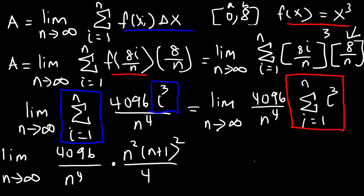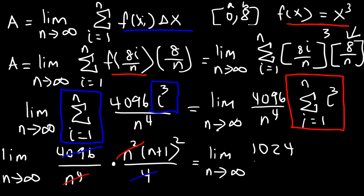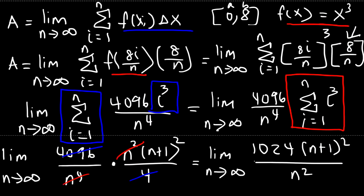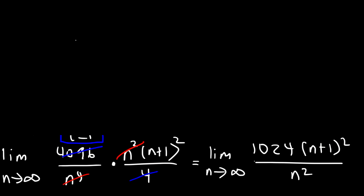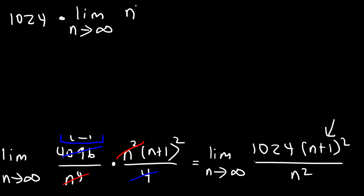Let's simplify. First we divide 4096 by 4: 4000 divided by 4 is 1000 and 96 divided by 4 is 24, so we get 1024. Then n squared divided by n to the fourth gives 1 over n squared on the bottom, and on top we're left with n plus 1 squared. Moving the constant 1024 to the front, we FOIL n plus 1 squared: that's n squared plus 2n plus 1, divided by n squared.